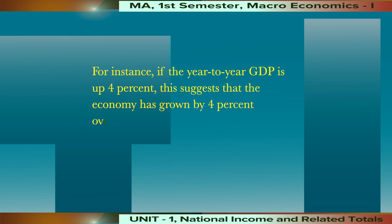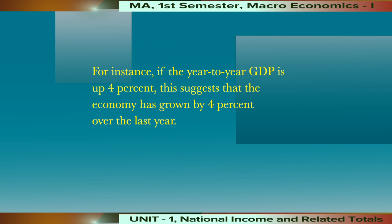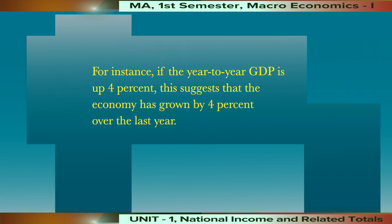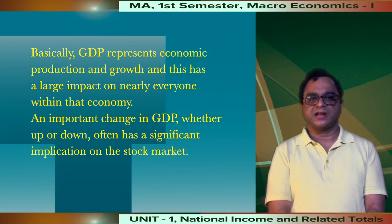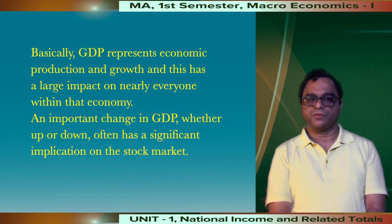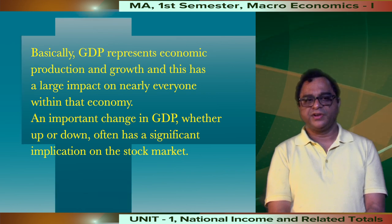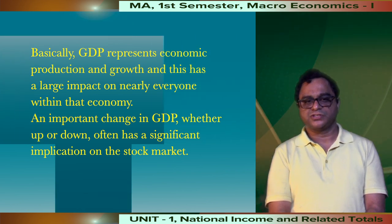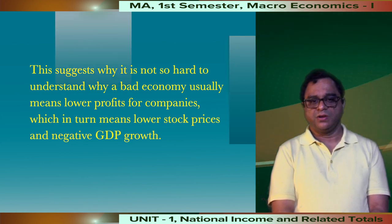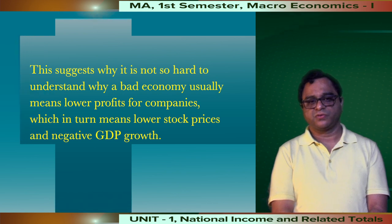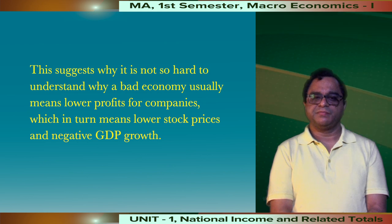For instance, if the year-to-year GDP growth is up to 4%, this suggests that the economy has grown by 4% over the last year. Basically, GDP represents economic production and growth, and this has a large impact on nearly everyone within that economy. A change in GDP, whether up or down, often has significant implications on the stock market. A bad economy usually means lower profits for companies, which in turn means lower stock prices and negative GDP growth.